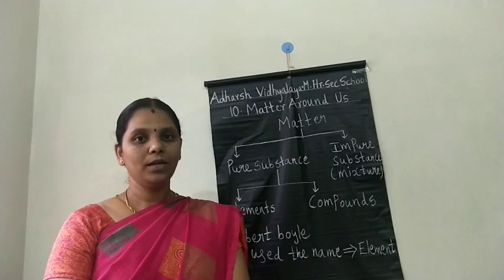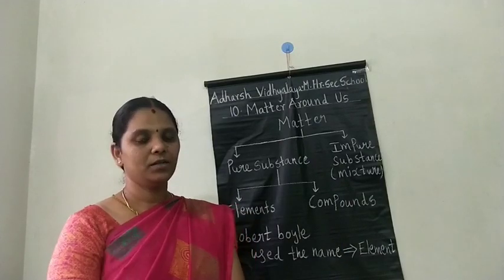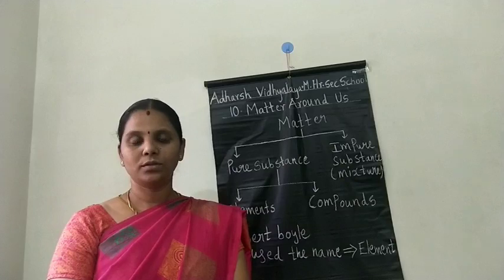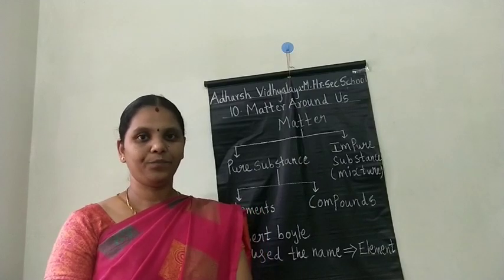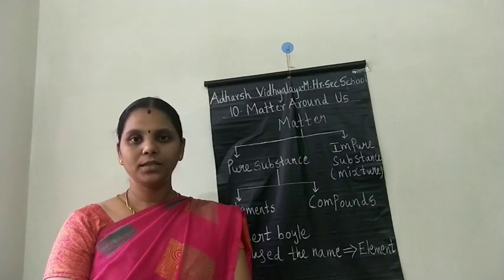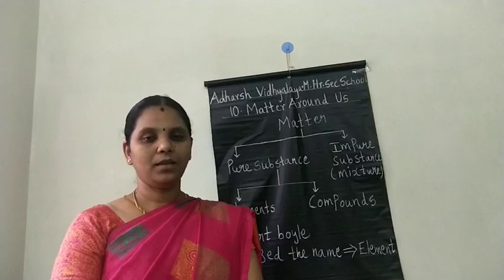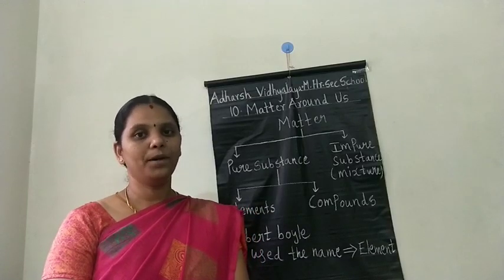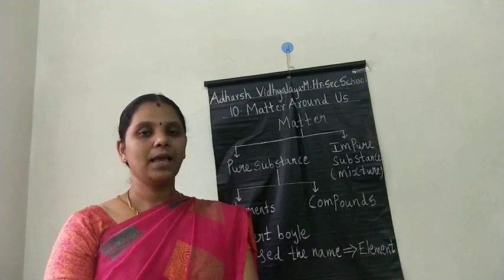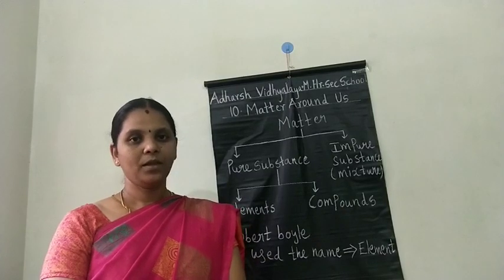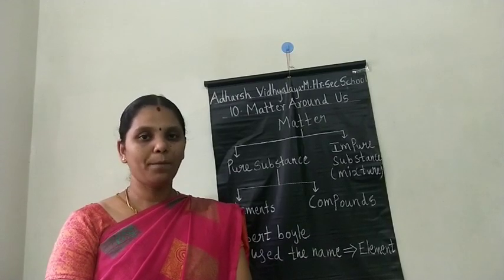Everything around us is called matter. For example, food we eat, air we breathe, stone, rocks, grain of sand — everything is called matter. These substances have two common properties: they occupy space, and they have mass.